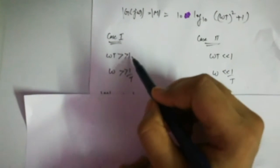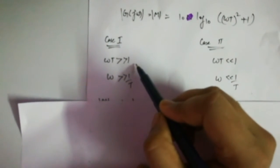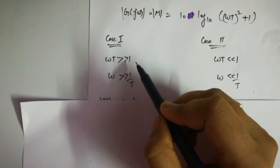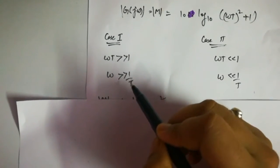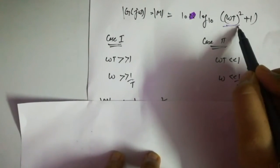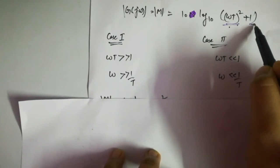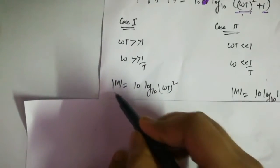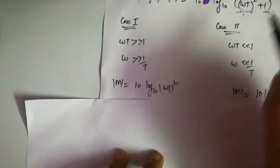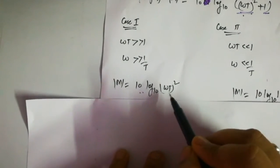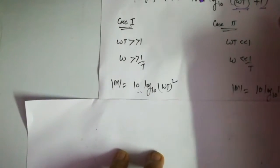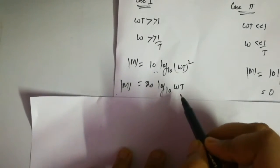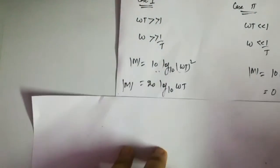The first case is when ωT > 1, meaning ω > 1/T. In this case, (ωT)² dominates and we can neglect the 1. So the magnitude becomes 10·log₁₀((ωT)²), and taking the square gives us magnitude = 20·log₁₀(ωT).